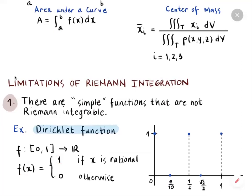If x is 0, 1/2, or 1 — those are rational numbers — the function values are all equal to 1. On the other hand, if you have e/10 or √2/2, the value is 0 because they are irrational. This simple function is not Riemann integrable.